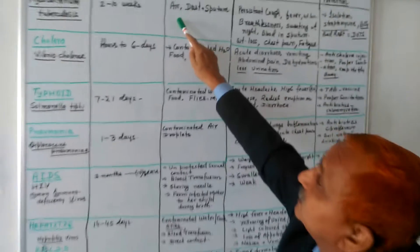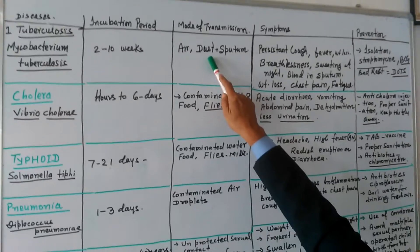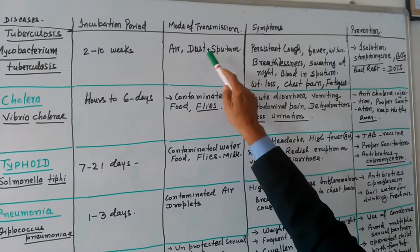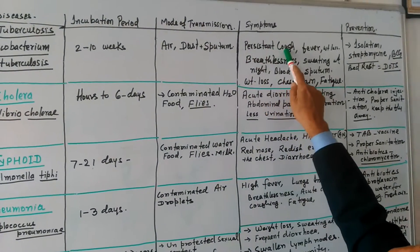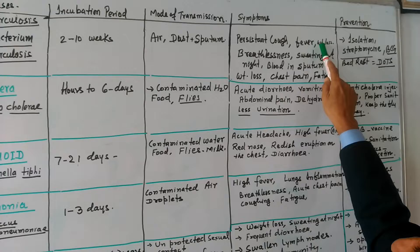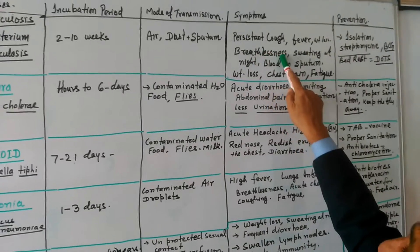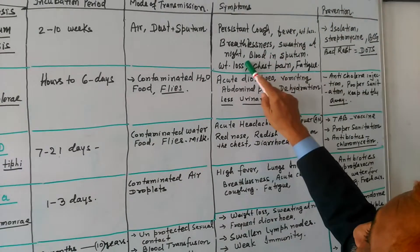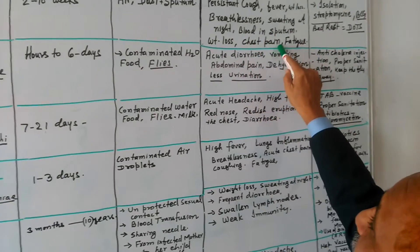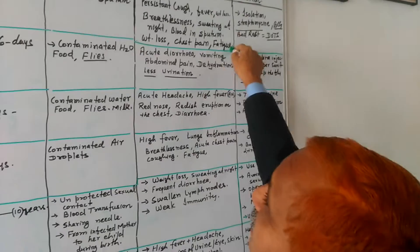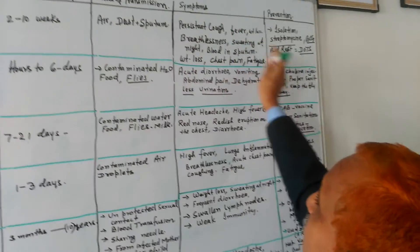The mode of transmission is it is airborne disease, through dust or sputum they may spread. Symptoms: we have a persistent cough, fever, weight loss, breathlessness, sweating at night, blood in sputum, weight loss and chest pain and fatigues. So these are the common symptoms in the tuberculosis.